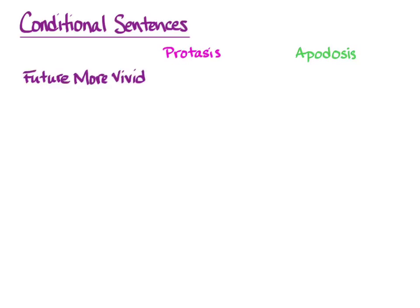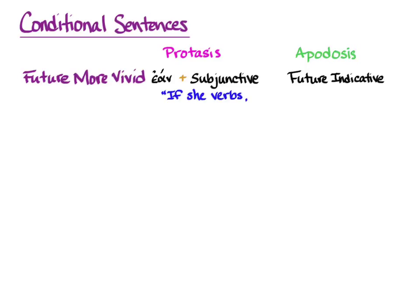Our first pattern is Future More Vivid. The 'if' is ἐάν, and in the protasis it takes the subjunctive — that subjunctive can be present or aorist, and the difference is about aspect. In the apodosis, it will have the future indicative. The default translation for the Future More Vivid is: 'if she verbs, she will verb.' If the condition in the protasis happens, the action in the apodosis will pretty certainly happen.